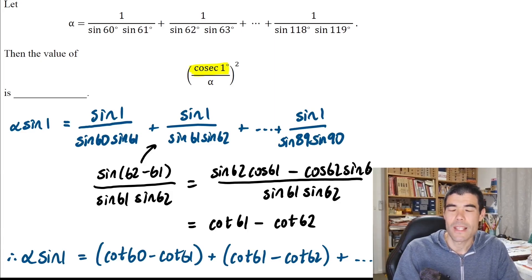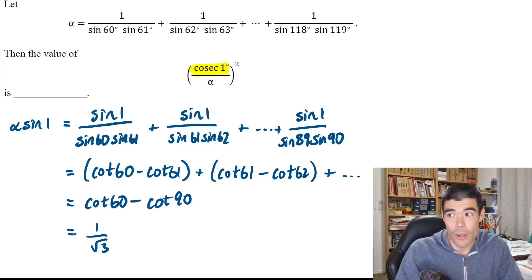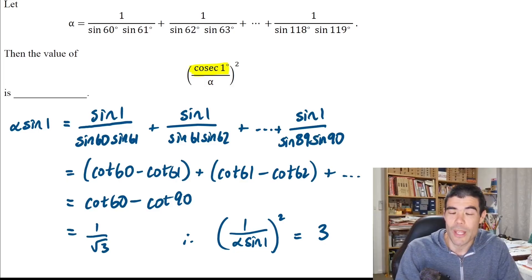In fact, all of them cancel except for the first term, cot 60, and the last term, cot 90. We can evaluate cot 60 as 1 over square root 3, and cot 90 is 0. Then what we want is the reciprocal, so flip it upside down, square it, and we get 3. Pretty nice, right? Thanks for watching.